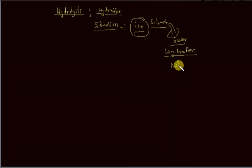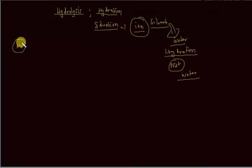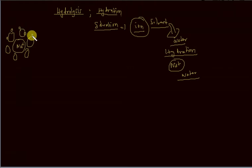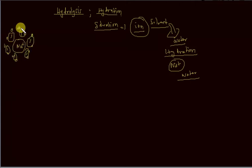Suppose there is a cation, something called as sodium ion. Then this cation is completely surrounded by water molecules. Suppose this is a sodium cation — it will be completely surrounded by water molecules. The small circles represent hydrogen and the bigger ones represent oxygen, which carries a negative charge, and hydrogen carries a positive charge.